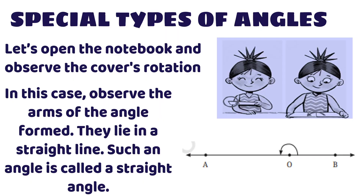Special types of angles. Whenever we open our notebook we will observe the cover rotation. A folded notebook when we open it becomes 180 degrees. In this case we observe that the arms of the angle formed lie in a straight line. Such an angle is called a straight angle. As shown in the figure, AB is a straight line and the angle formed is a straight angle.